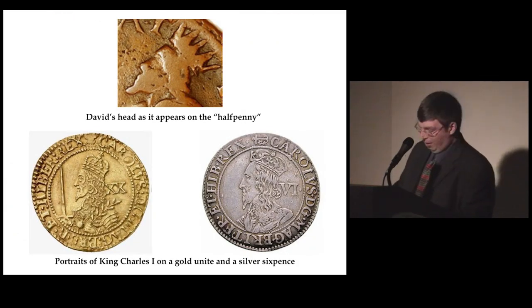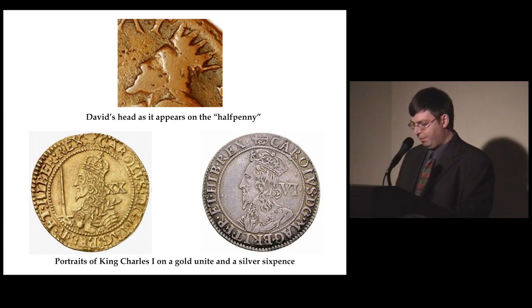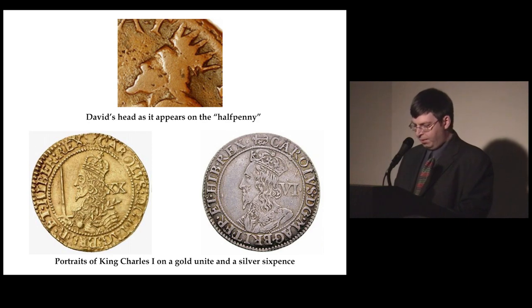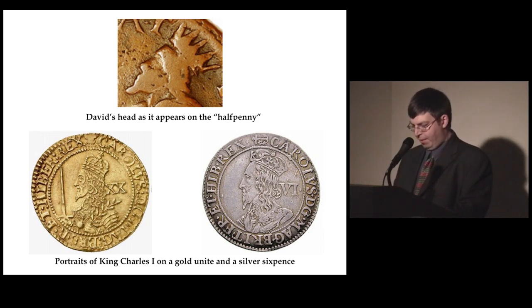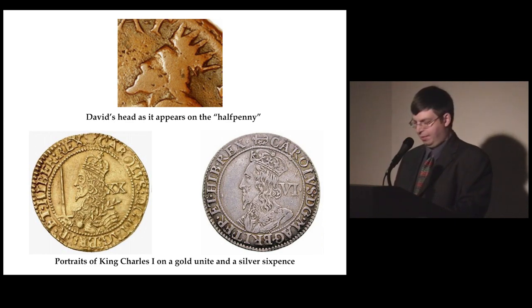The king's head, which is only about five millimeters from beard tip to crown on the halfpence and three millimeters on the farthings, is far too small to distinguish the facial features of Charles I. Thus it seems most likely that the features recognized by Maris in the David type were the pointed beard and the shoulder-length hair, rather than the details of the face.